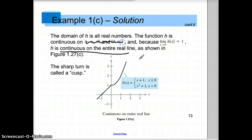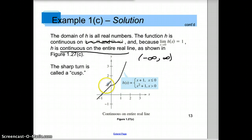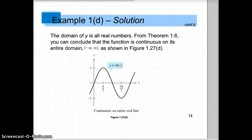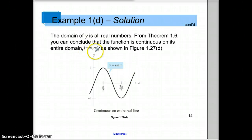You'd want to write negative infinity to infinity as the domain because it's also continuous at zero. So even at a sharp turn, as long as you didn't have to pick up your pencil and move it, it's continuous. And of course, something like the graph of sine x, where you can just keep drawing forever, is continuous on the entire domain — all real numbers, or negative infinity to infinity.